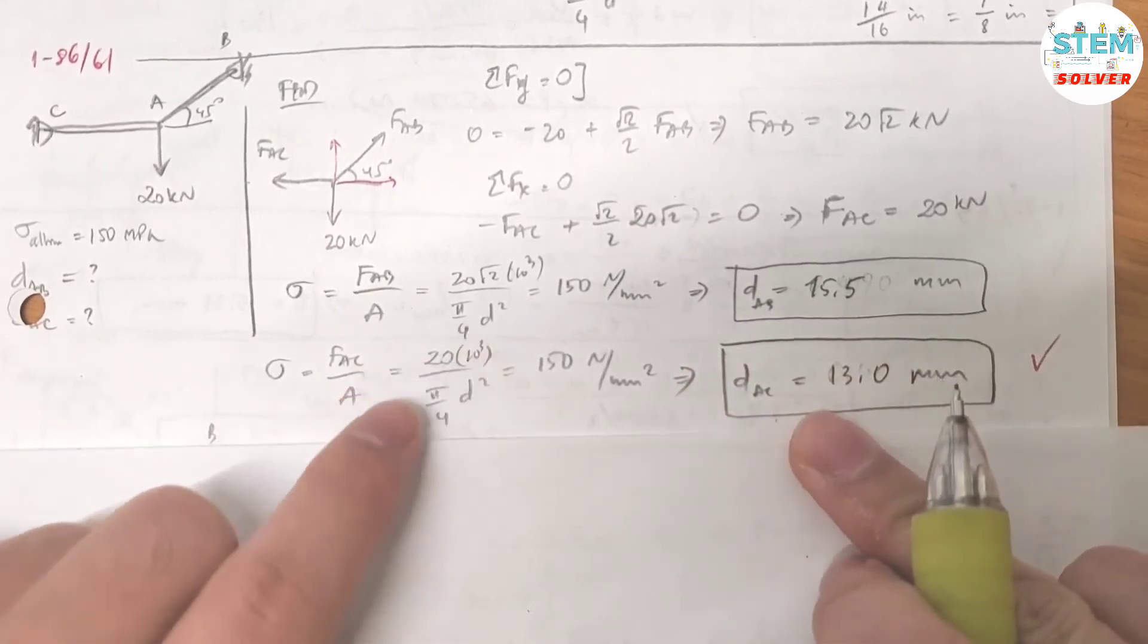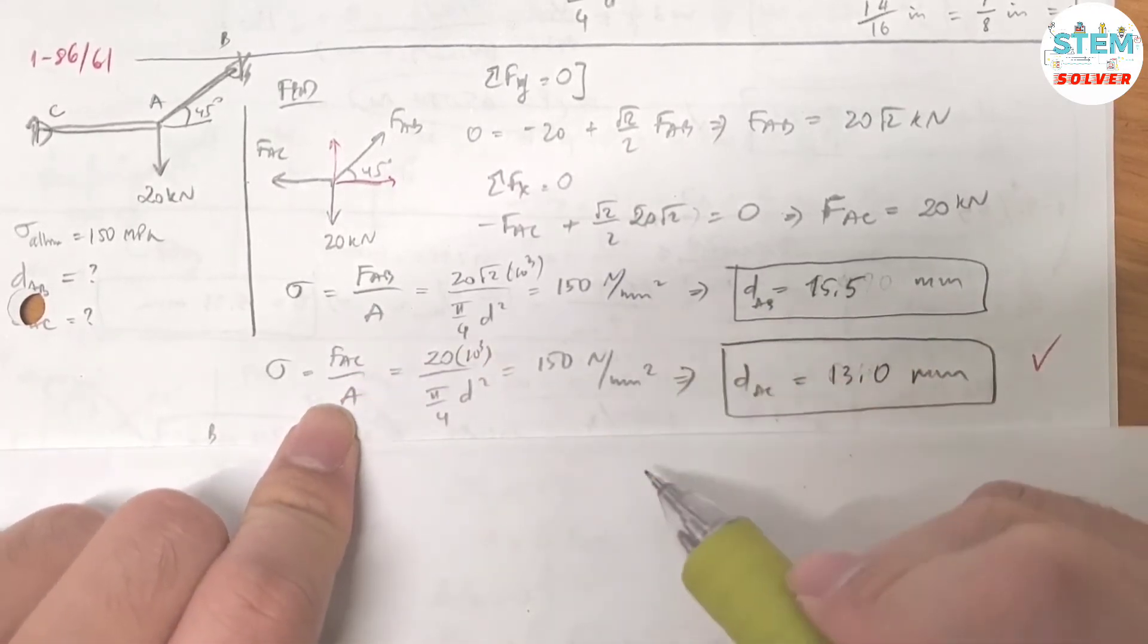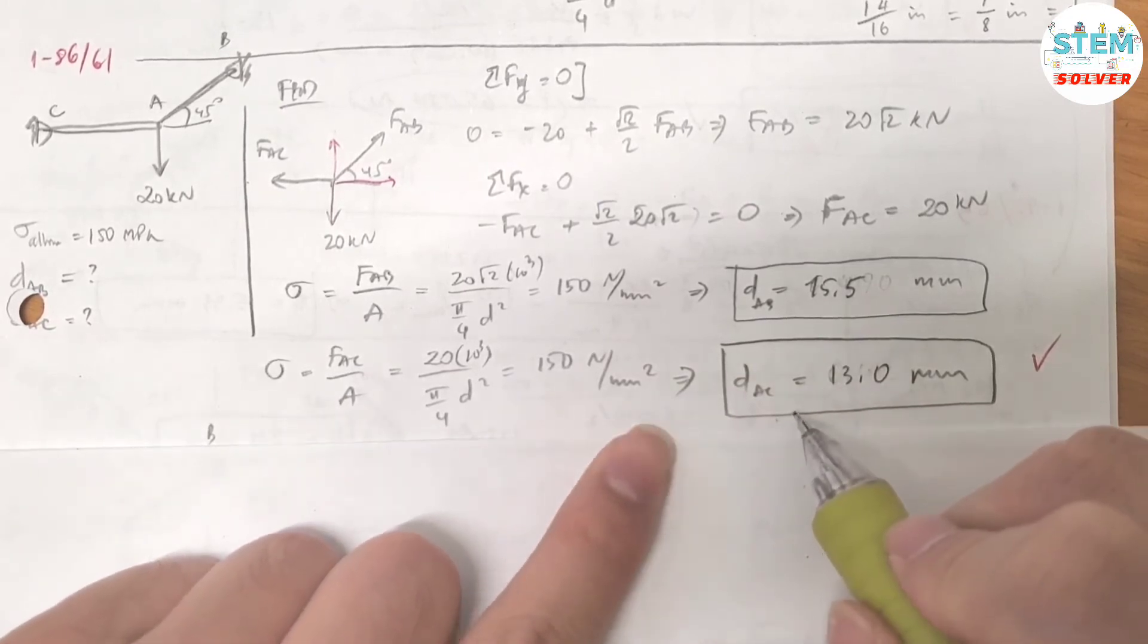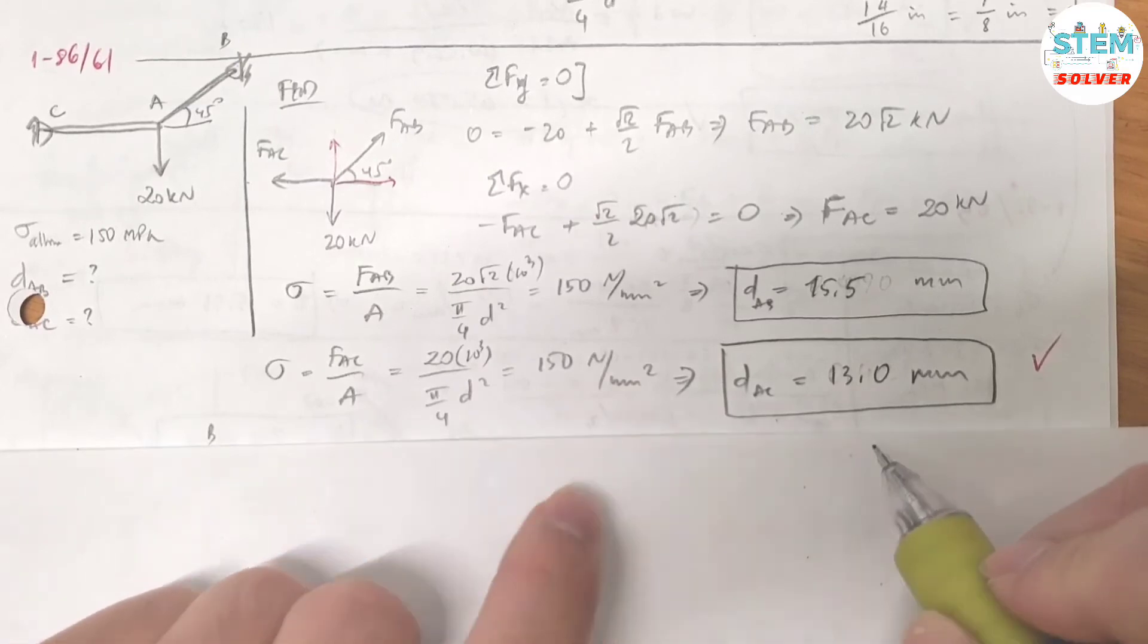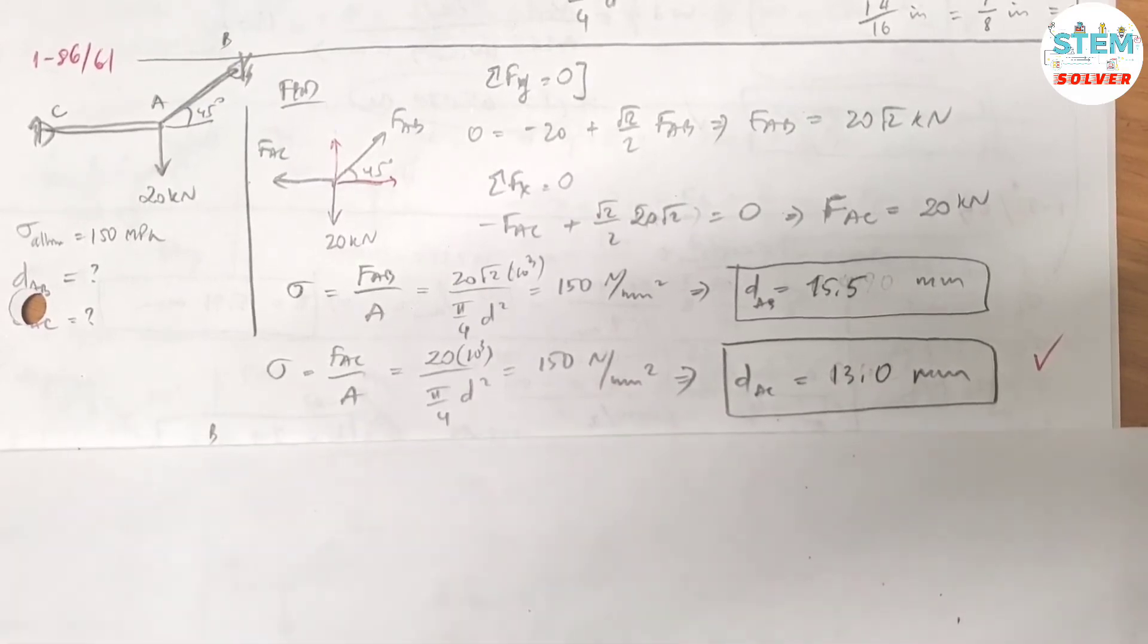Now you're going to do the same thing for cable ac. Then you found out that the diameter for cable ac equals 13 mm. This is a very simple question. That's it.